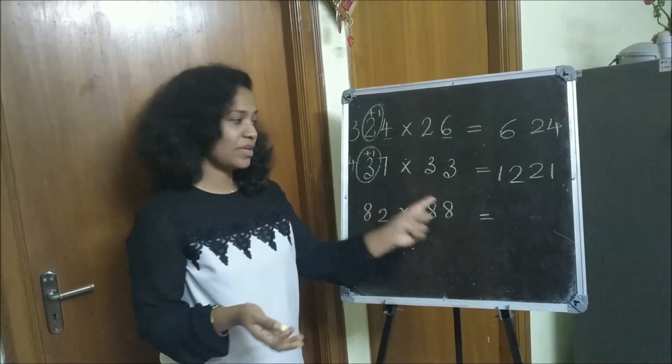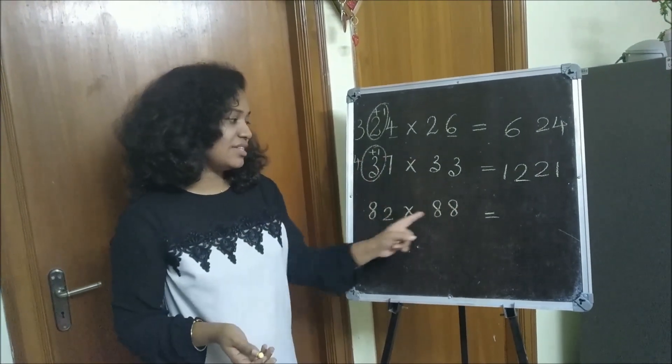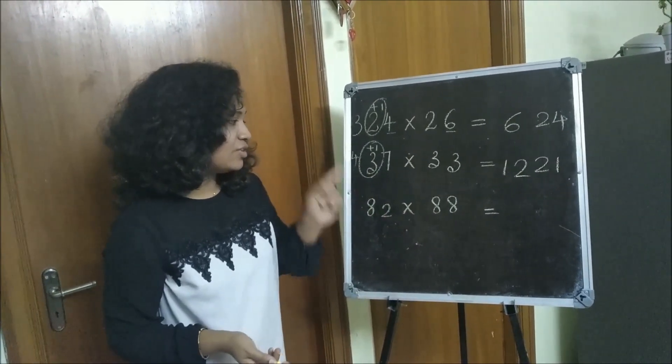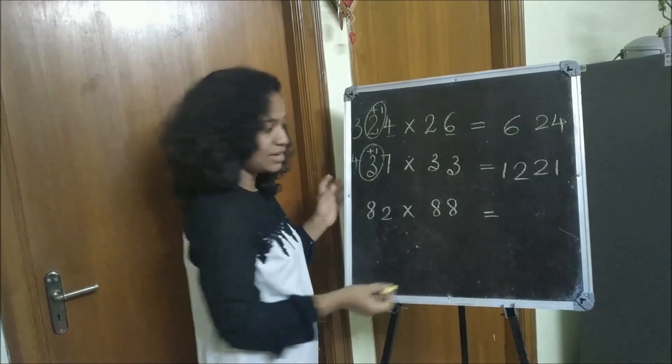Can you just guess and tell? 8 twos are 16. 8 nines are 72, so 7216, right?